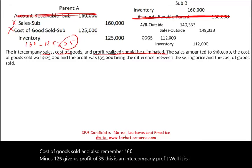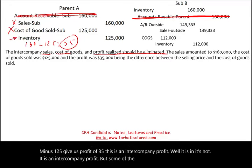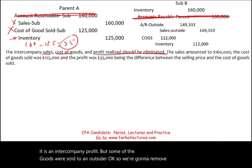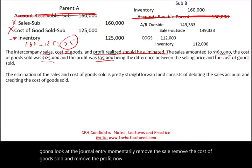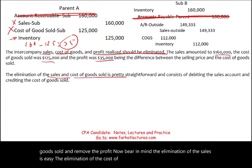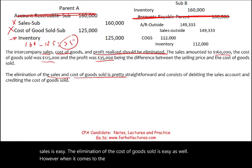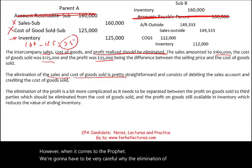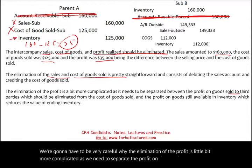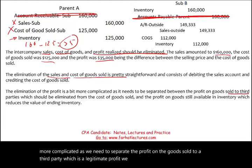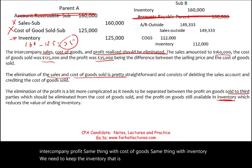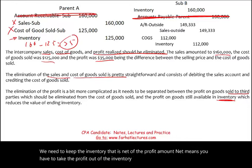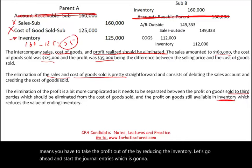The elimination of sales is straightforward, as is eliminating cost of goods sold. However, for the profit we need to separate the profit on goods sold to a third party — which is a legitimate profit we keep — from the profit that is still intercompany. Similarly for inventory: we need to carry inventory net of the intercompany profit, meaning we reduce inventory by the profit amount still embedded in it. Let's now prepare the journal entries that clarify all three steps.